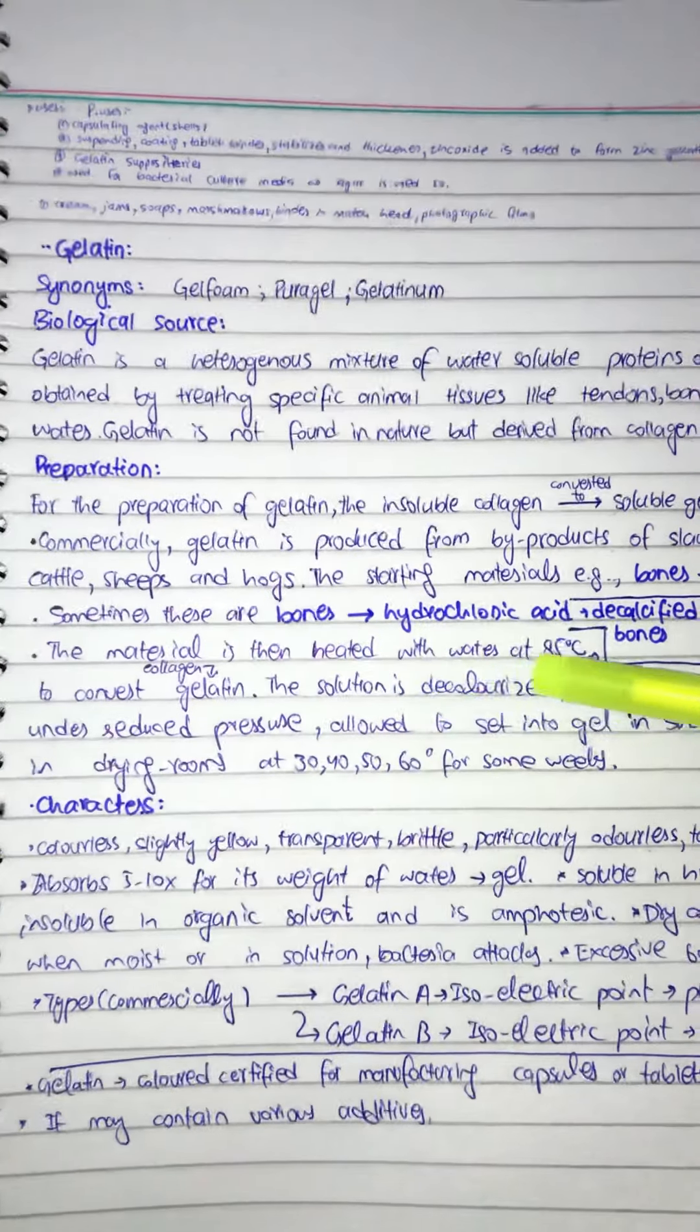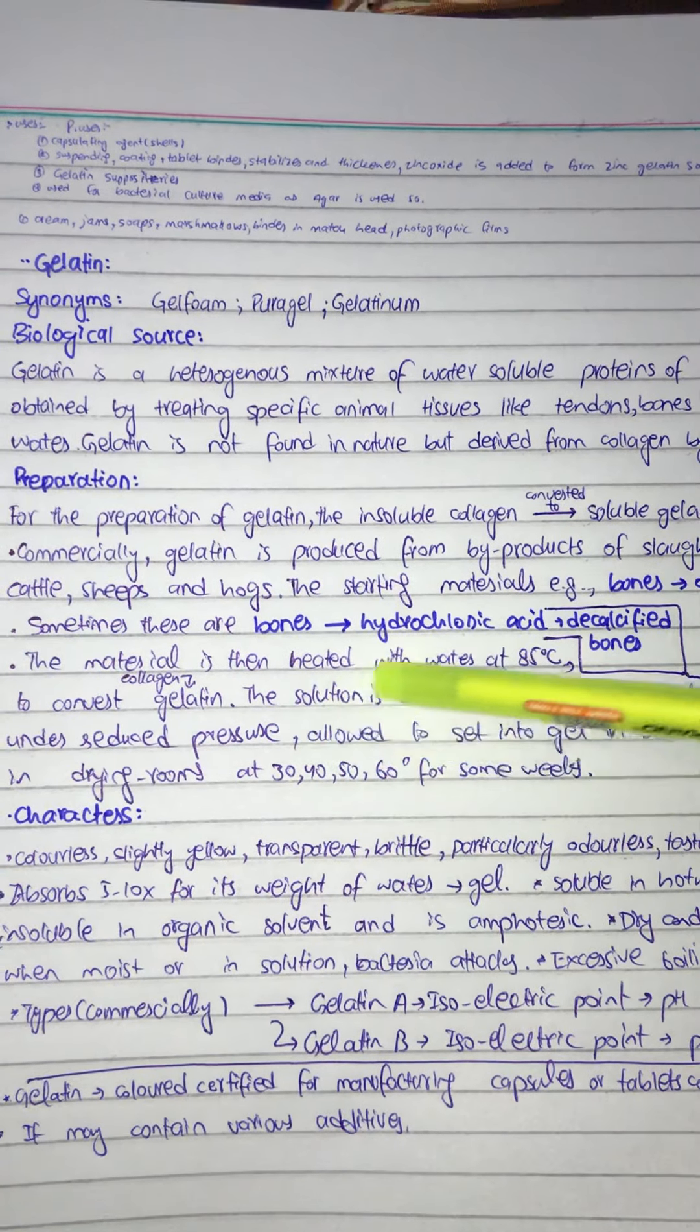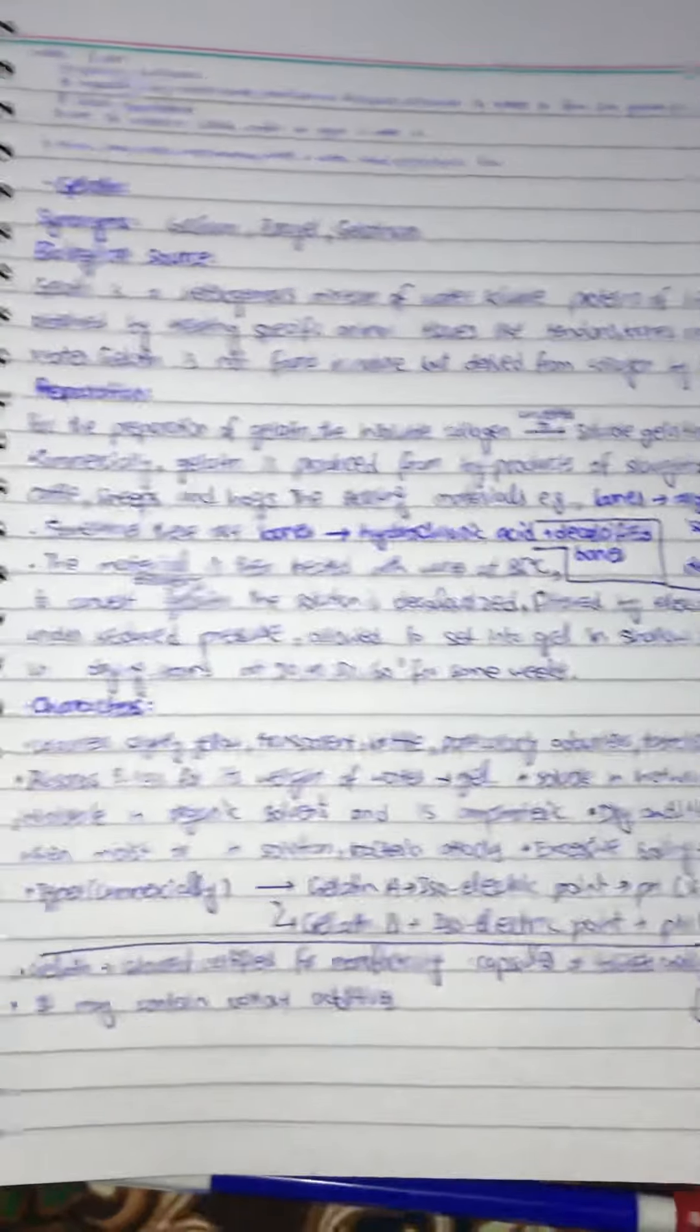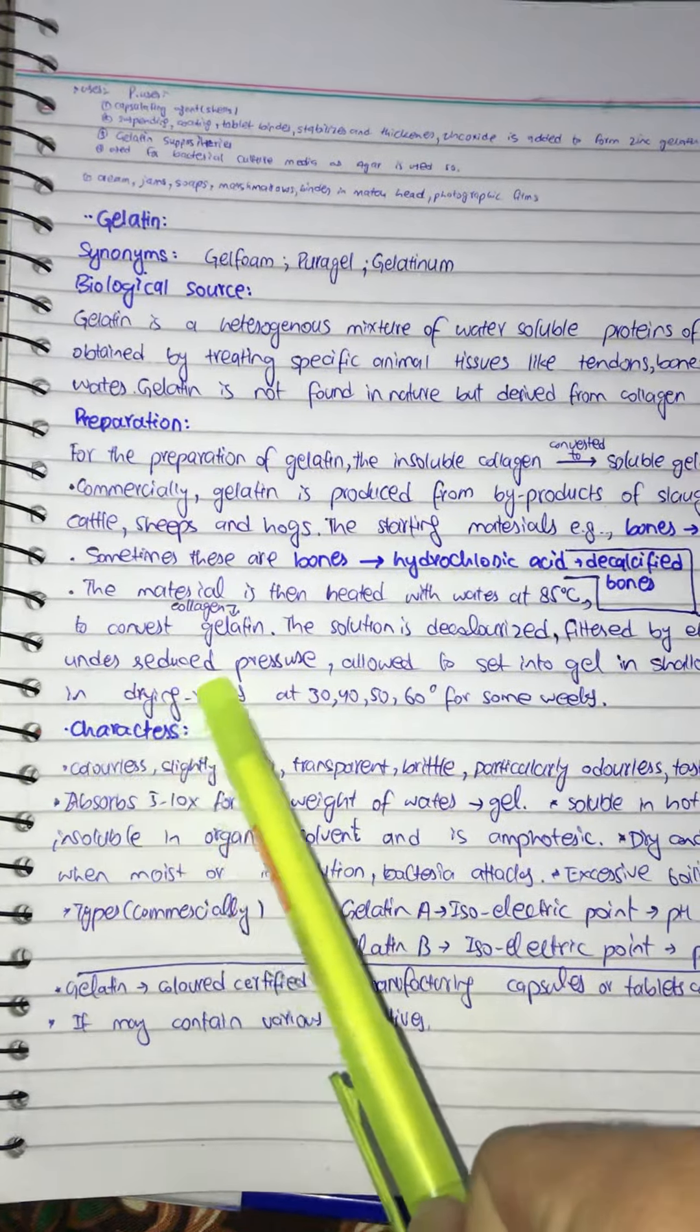The solution is decolorized, the color is faded, and filtered by electro-osmosis, concentrated under reduced pressure, allowed to set into a gel in shallow trays, and dried rapidly in drying rooms at 30, 40, 50, 60 degrees Celsius for some weeks.